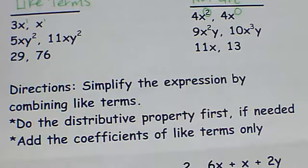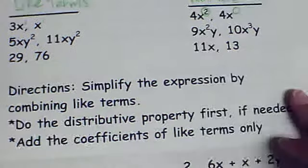So to do things with like terms I add things that are alike. I add their coefficients and leave the exponents alone. If I need to do distributive property first we'll do that.